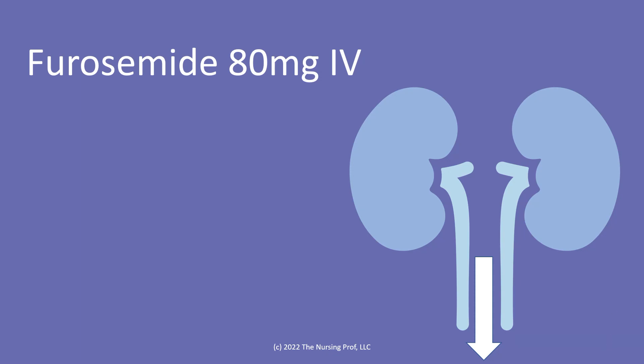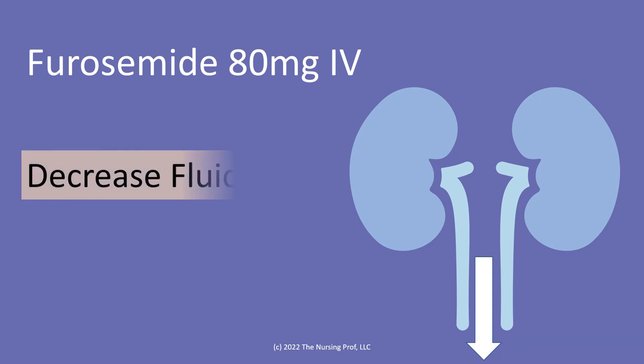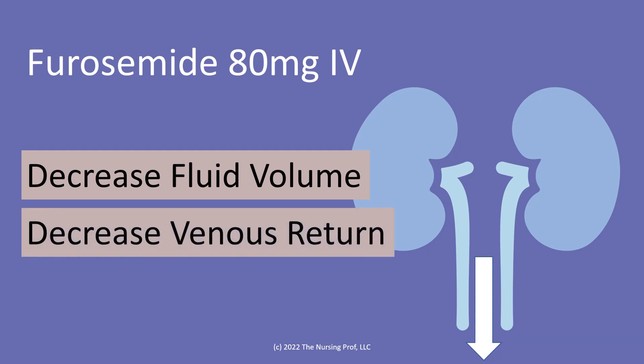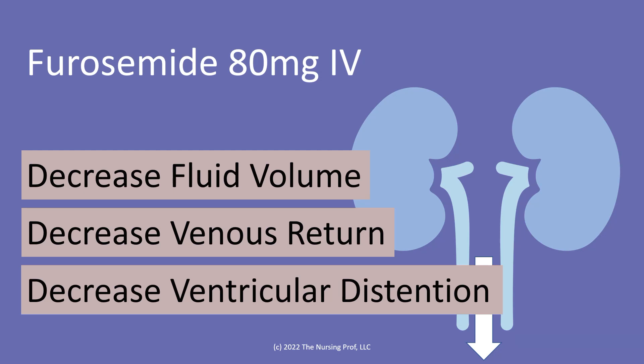In a study by Lim et al., they took a look at using furosemide 80 mg IV in patients who had a fairly large type of pulmonary embolus, one that was sufficiently large that it was causing the patient to have symptoms. The idea was, if we can decrease the fluid volume, that will decrease the venous return to the heart and then decrease our ventricular distension.